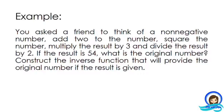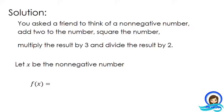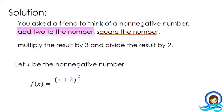To find the original number, we consider the different givens presented in the problem. First: think of a non-negative number. The unknown is that non-negative number — we let it be x. This is our starting point. For our function f(x), first we add 2 to the number, which means x plus 2. Next, square the number, so we put an exponent of 2: (x + 2)².